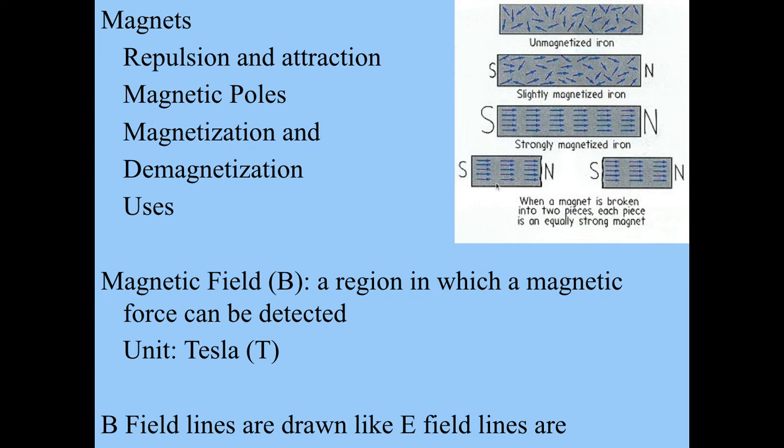Then if you break the magnet, of course, you get north and south on either end. The domains remain consistent.